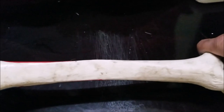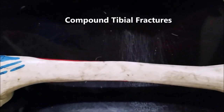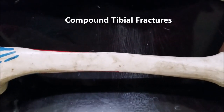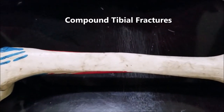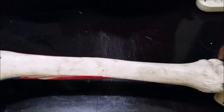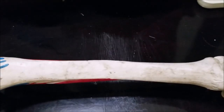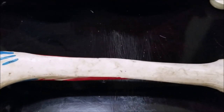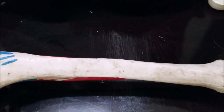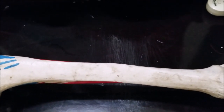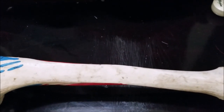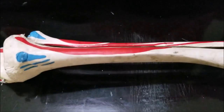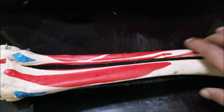This brings us to an important clinical correlation. If there is a tibial fracture, it is very likely to become a compound fracture. Compound fracture means when the bone fragments protrude out through the skin. It can be compound either from within or from without. From within means a fragment pierces through the skin and comes out; compound from without means some penetrating injury breaks the bone and causes it to communicate with the outside surface.